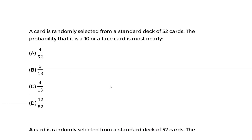Now let's dive into the first question. A card is randomly selected from a standard deck of 52 cards. The probability that it is a 10 or a face card is most nearly what? The first important question to ask is: is this a mutually exclusive event or a non-mutually exclusive event? A mutually exclusive event involves two separate events that cannot occur simultaneously — they do not depend on each other.